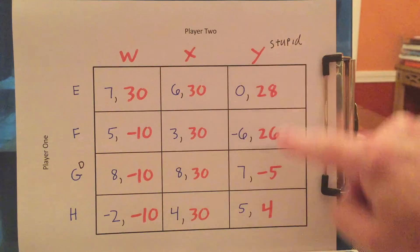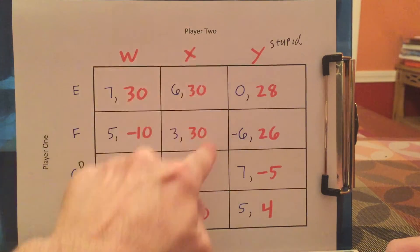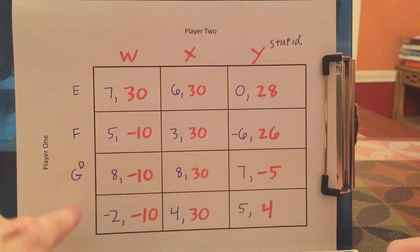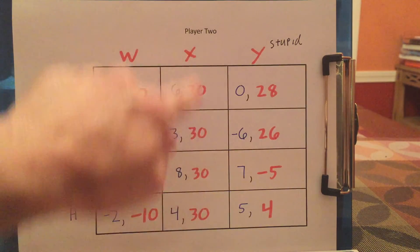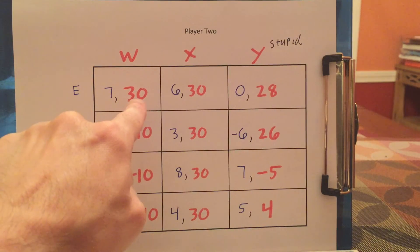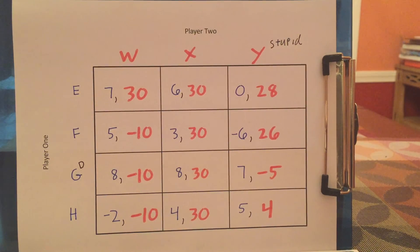For player two, Y is stupid. If E is played, everything beats Y. If F is played, X beats Y. If G is played, X beats Y. And if H is played, X beats Y. So Y is stupid because you're always better off playing X than Y. But X is not a dominant strategy, because if E is played, you get the same payoff from W as you do from X — so X is weakly dominant, but not a dominant strategy. In summary: a dominant strategy beats everything else, ties don't count, and rational players always play it. A stupid or dominated strategy is one where one thing always beats it, ties don't count, and you never play a dominated strategy.